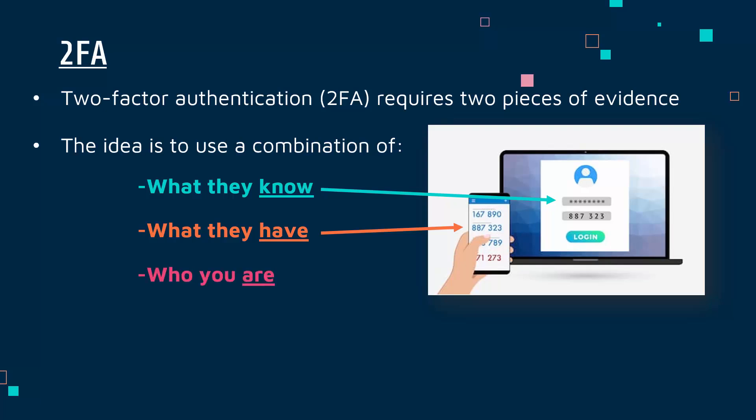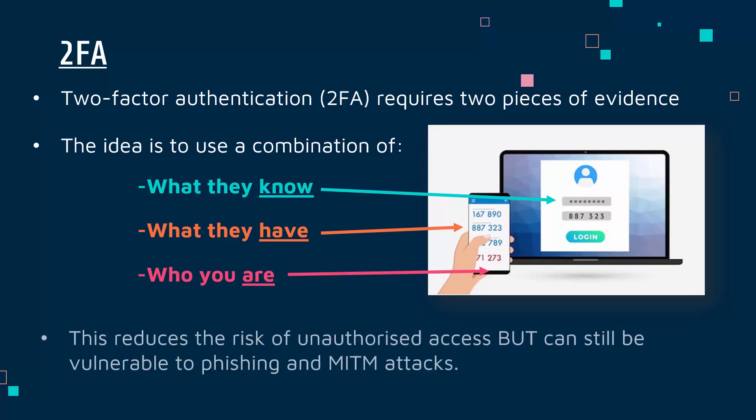A third category is 'who you are' — trying to use some information about you, usually about your body, so biometrics fall under this category. For example, if this phone has a fingerprint reader, the app receiving the code might need a fingerprint to access it. This limits the risk of an attacker gaining access because it's another hurdle they have to jump through to fake authentication. Generally, two-factor authentication — which can be multi-factor authentication (MFA) using more than two bits of evidence — has the whole purpose of trying to reduce the risk of unauthorised access by adding more steps for an attacker to make it much harder.